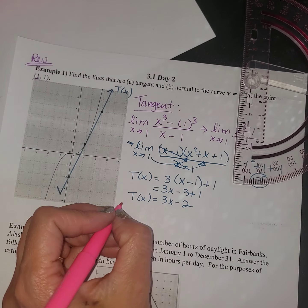All right, and then for n of x, the normal line, we know that we have to take the slope of the tangent line and find its opposite reciprocal. The opposite of positive is negative, and the reciprocal of 3 is 1 third. So n of x is going to equal negative 1 third times x minus 1 plus 1. And when we distribute, we're going to have negative 1 third x plus 1 third plus 1. So then that will be negative 1 third x plus 1 and 1 third.